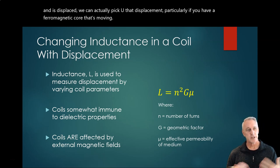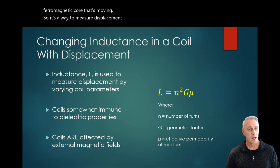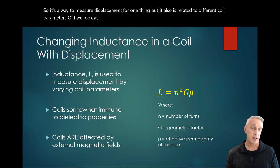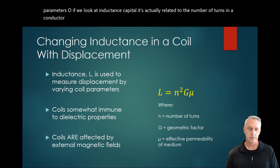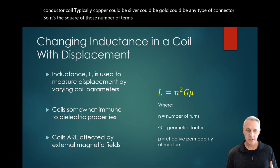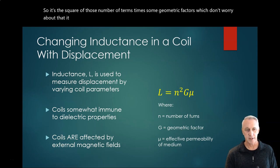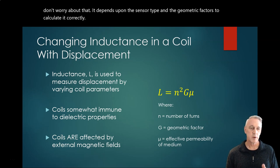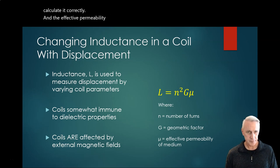So it's a way to measure displacement, but it's also related to different coil parameters. If we look at inductance, capital L, it's actually related to the number of turns in a conductor coil—typically copper, could be silver, gold, or any type of conductor. So it's the square of those number of turns times some geometric factors, which depends upon the sensor type to calculate correctly, and the effective permeability of the medium, which is μ.